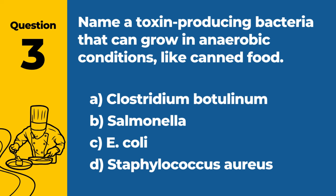Question 3: Name a toxin-producing bacteria that can grow in anaerobic conditions, like canned food. A. Clostridium botulinum. B. Salmonella. C. E. coli. D. Staphylococcus aureus. Answer: A. Clostridium botulinum. Clostridium botulinum is a toxin-producing bacteria that can grow in anaerobic conditions, like those found in improperly canned food.